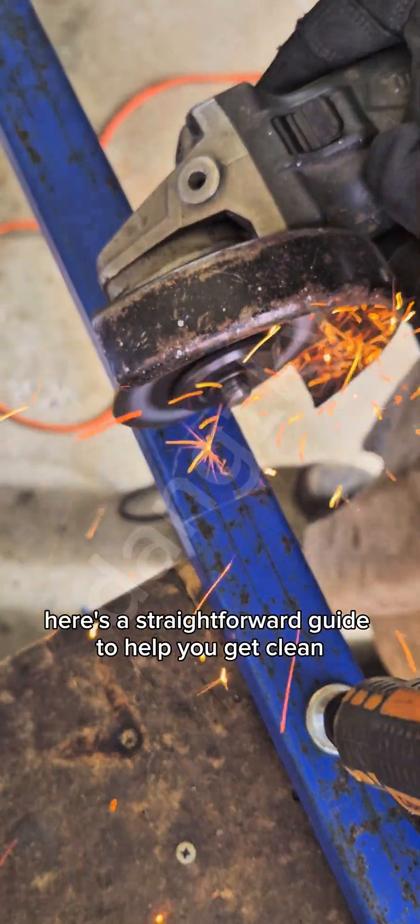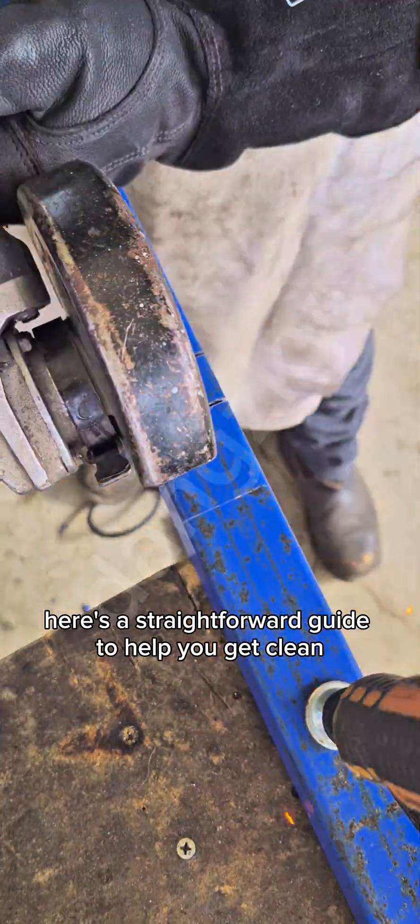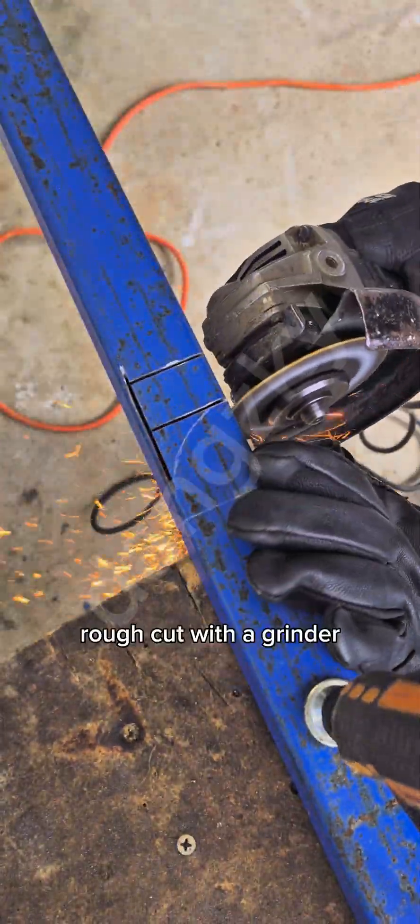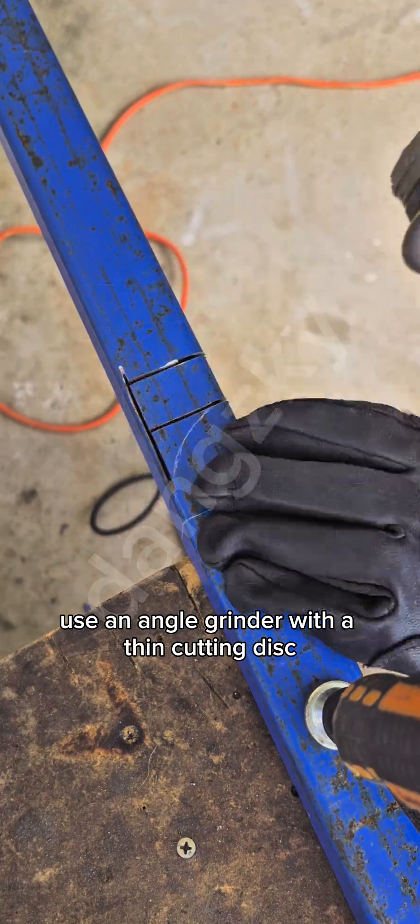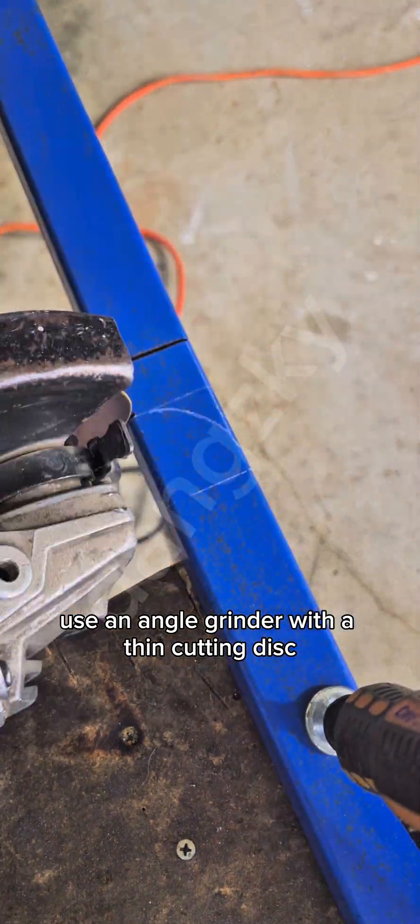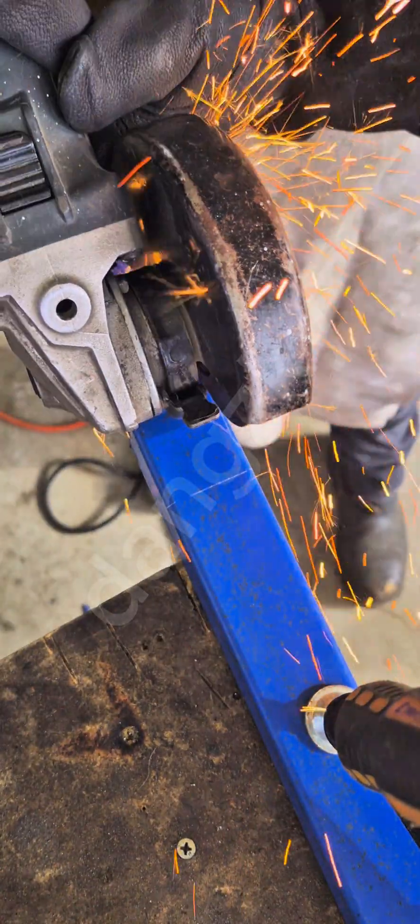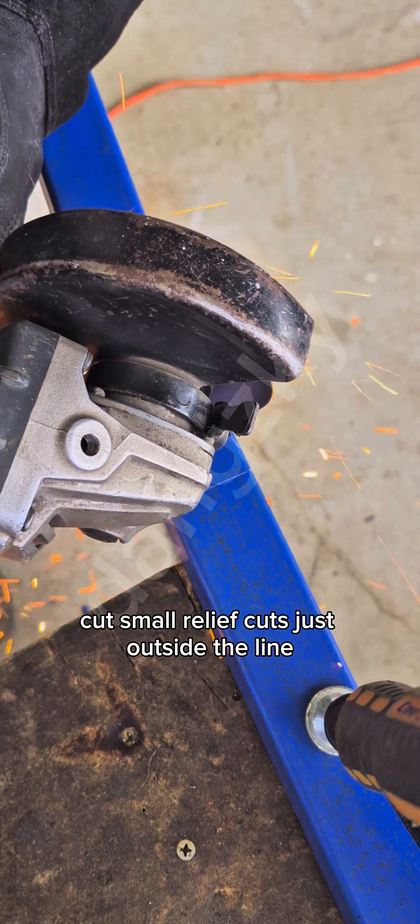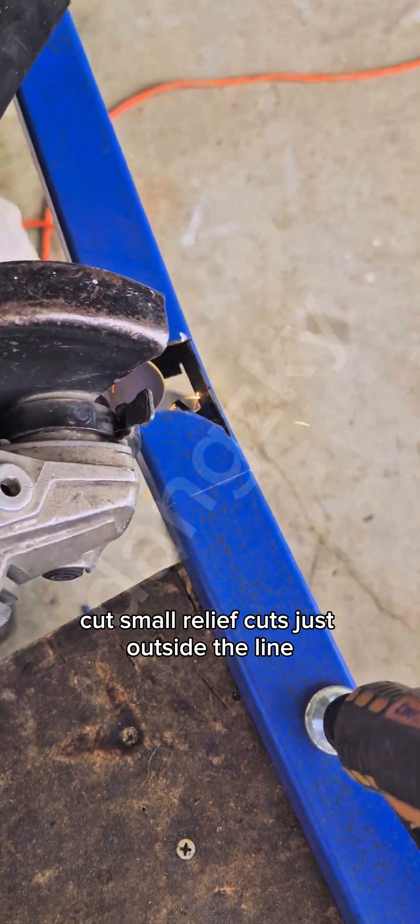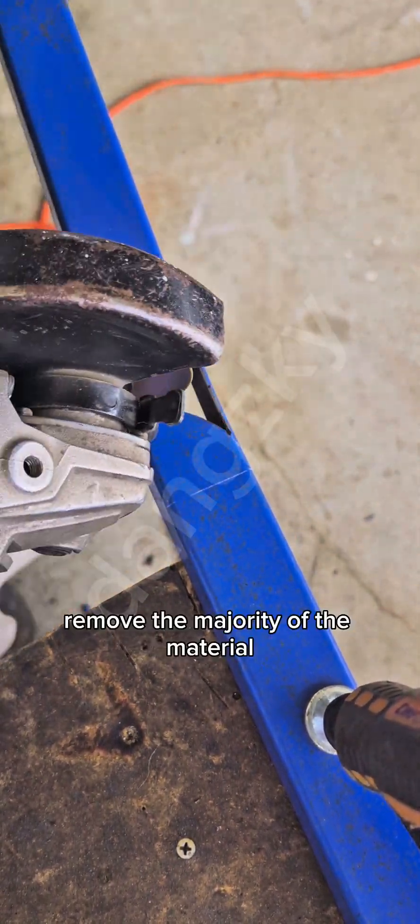Here's a straightforward guide to help you get clean, repeatable results. Rough cut with a grinder. Use an angle grinder with a thin cutting disc. Cut small relief cuts just outside the line. Remove the majority of the material.